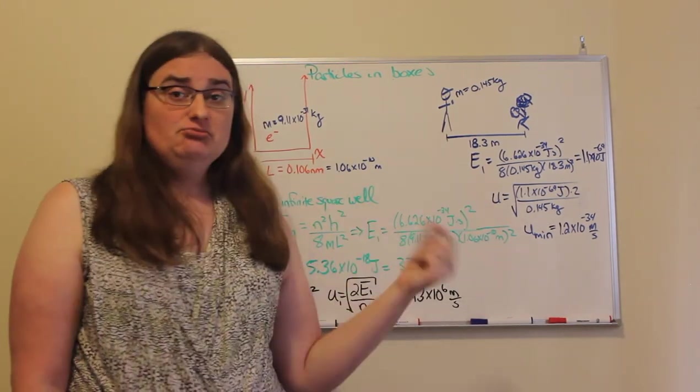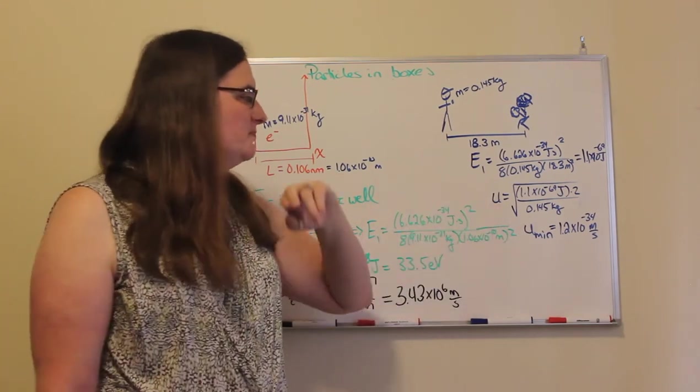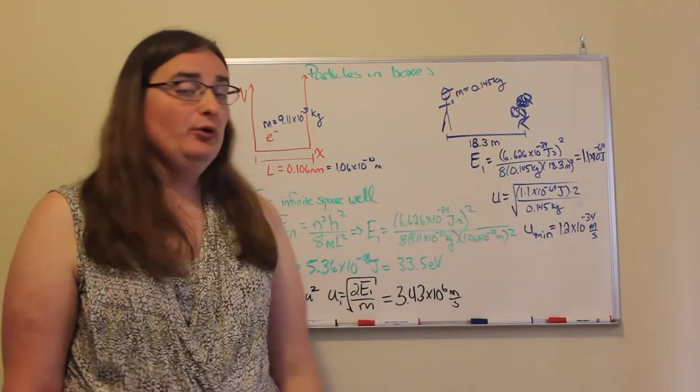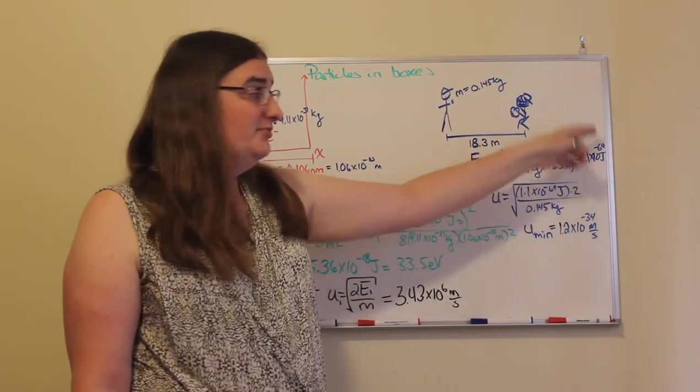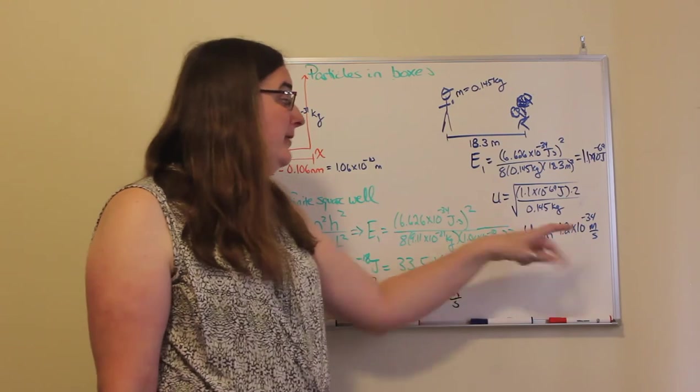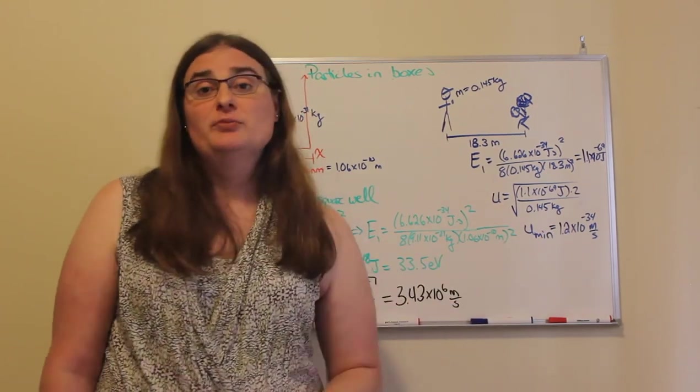Now, that means it's moving in theory. Well, the speed would be two times that energy divided by 0.145 kilograms and we take the square root. So essentially, we're looking at something close to the square root of 10 to the negative 69. We'd get a minimum speed of 1.2 times 10 to the negative 34 meters per second.